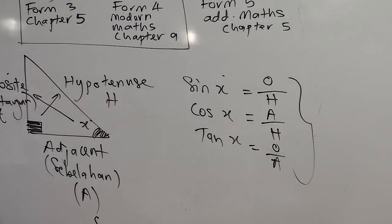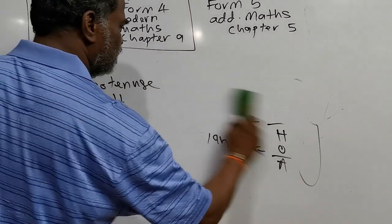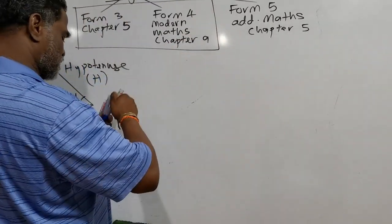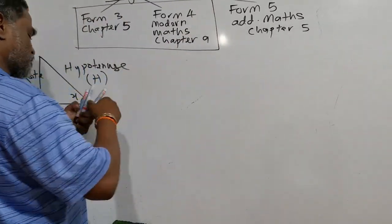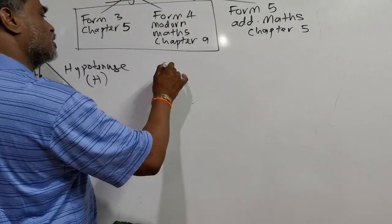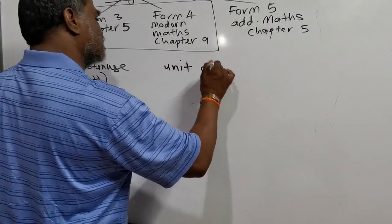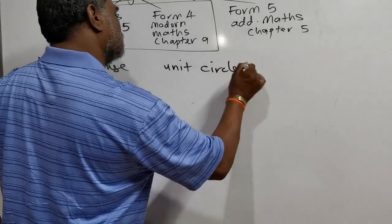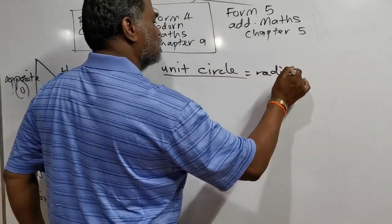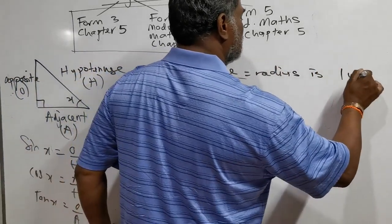Now we go to Form 4 Modern Math Chapter 9. Actually it is the same concept, but here you need to use the unit circle. Unit circle means the radius is one unit.